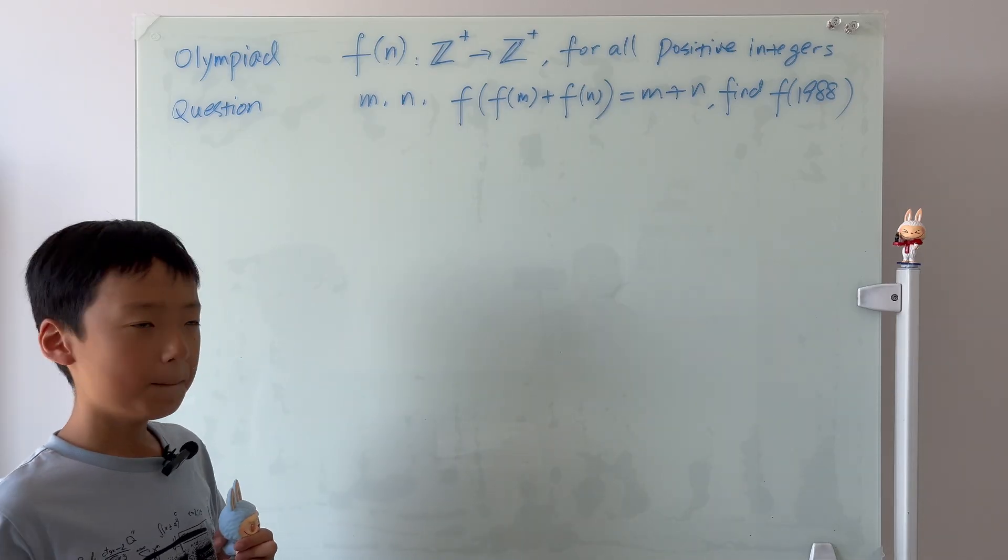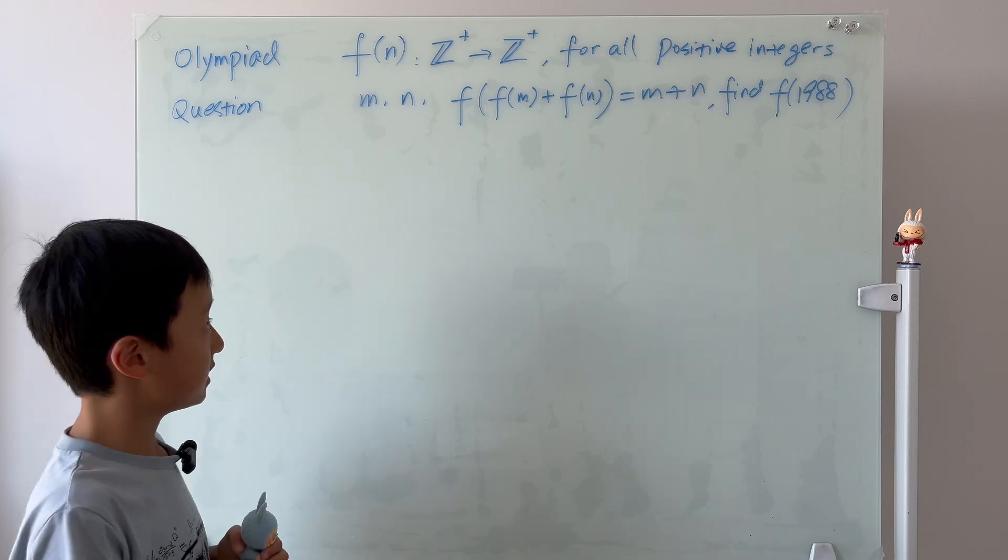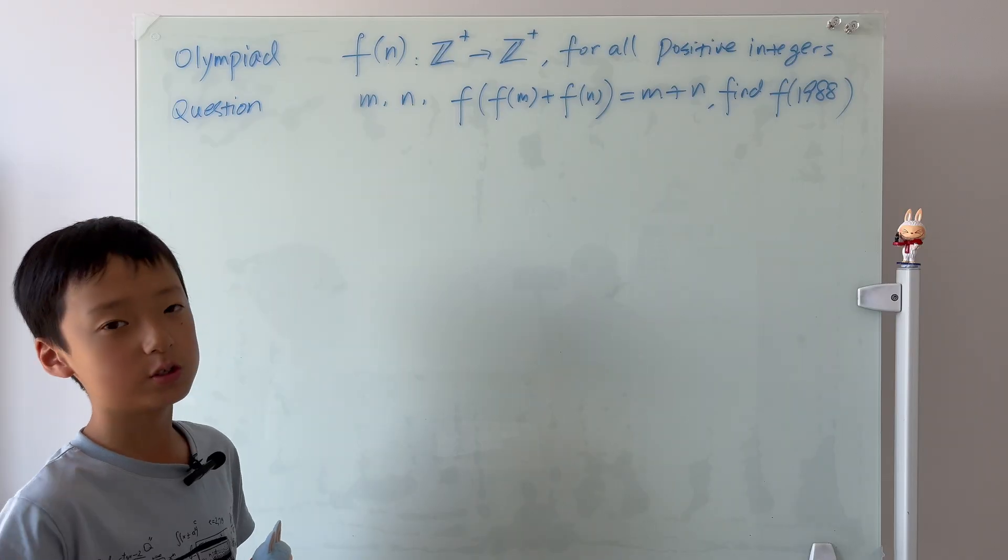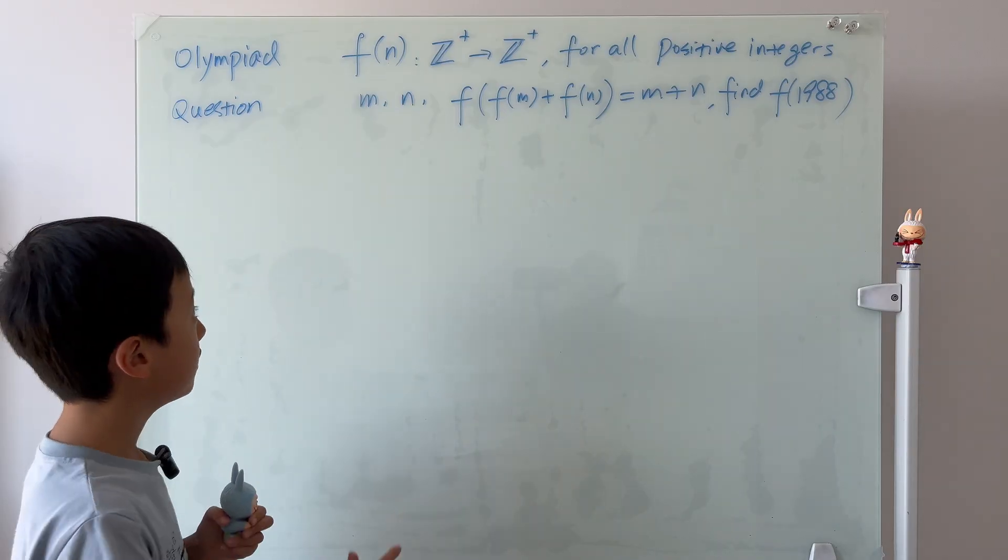So, why don't we just let f of m be m and f of n be n? Simple, right? But then, we can't just say that and then say that we solve the question. We have to prove it. But how? Using mathematical induction.